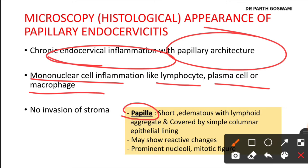The papillae are short and edematous with a lymphoid aggregate within them. If you observe the papilla, lymphoid aggregates are present, and they are covered by a simple columnar epithelial lining — because the endocervix is normally lined by columnar epithelium.